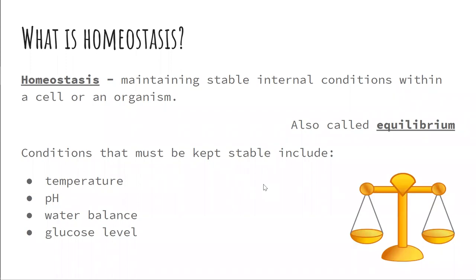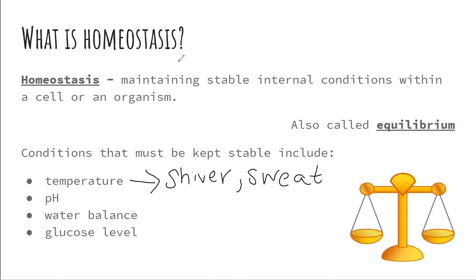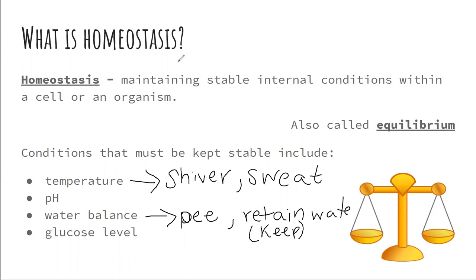So what are some ways that we maintain homeostasis? Well, when we're trying to maintain a stable temperature, we shiver when cold or we sweat when we're hot. These are our body's mechanisms of warming us up or cooling us down. Another example is maintaining water balance. To maintain our water balance, we either urinate or we retain water. So when you drink too much water, you're eventually going to have to pee. But if you don't drink enough water, we retain all of it so that we can continue to run our systems how we're supposed to.